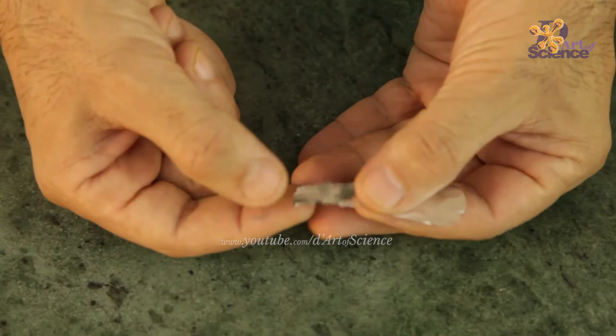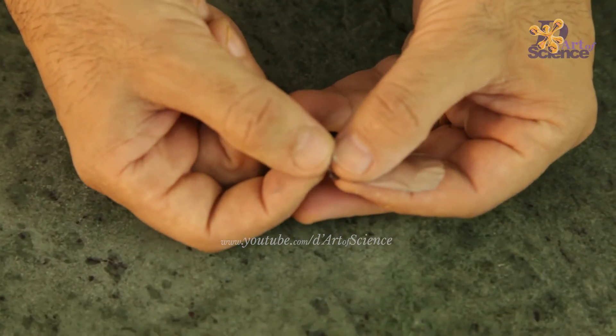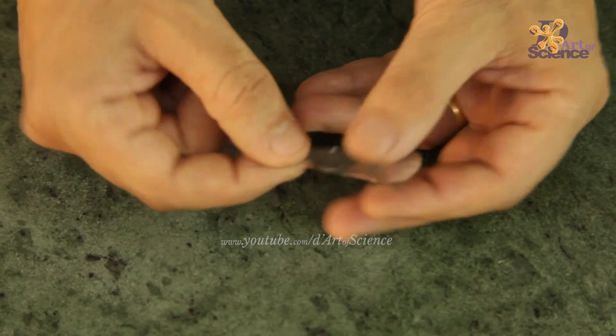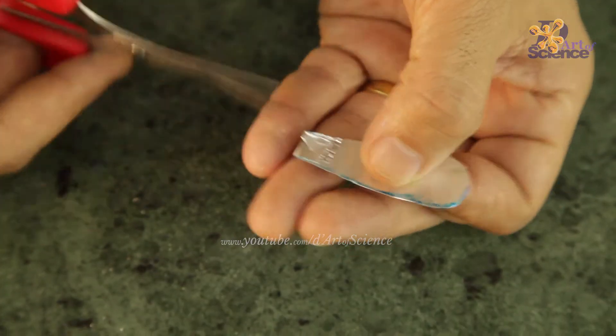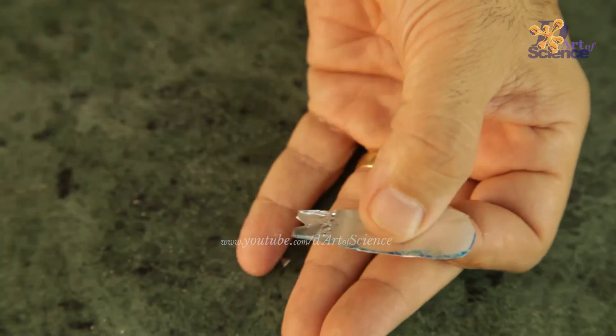Now we need to make a hole on the thinner end of both the leaves. The simplest way to do that is to bend it and make two cuts as shown and the hole is made.